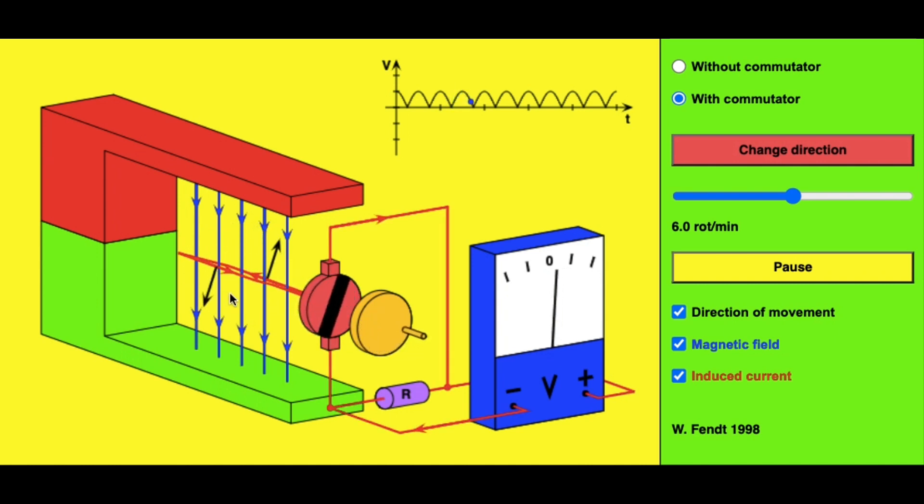This coil within the magnetic field. Whether that is a hydroelectric power plant, a coal-fired power plant, or a wind turbine, it is something external that is causing this coil to rotate within this magnetic field.